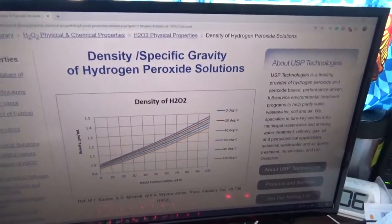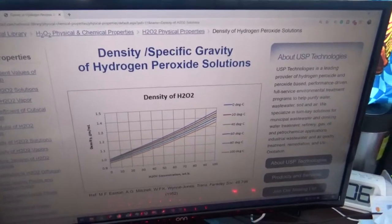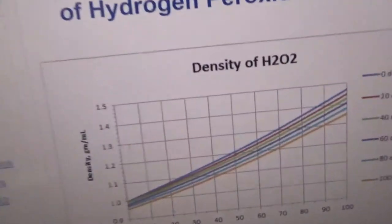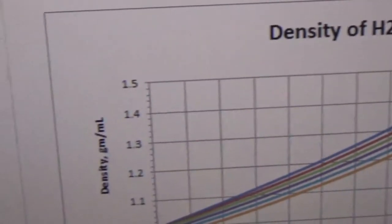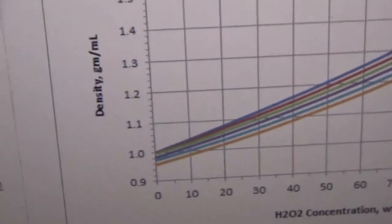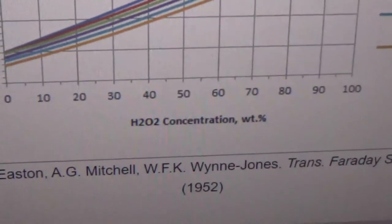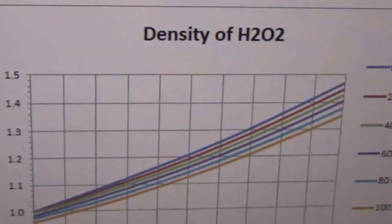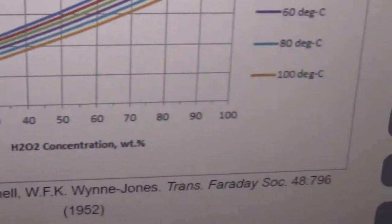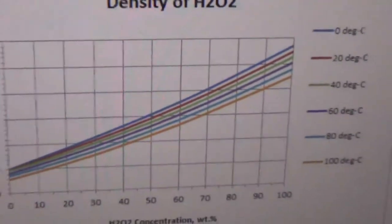Now over on my computer I have the density slash specific gravity chart. Specific gravity is basically just density of hydrogen peroxide solutions. As you can see on the graph, it gives you the density in grams per milliliter with the concentration of H2O2. So the higher the concentration as a percentage, the denser it is, which makes sense because hydrogen peroxide is more dense than water.